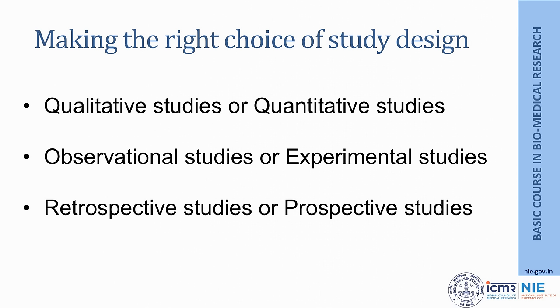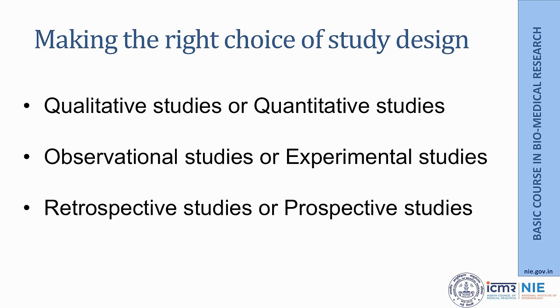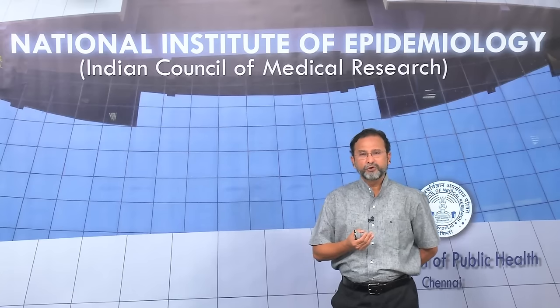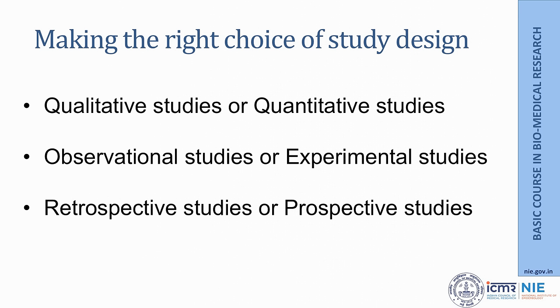One important thing is that if we want to do sound research, it is really critical that we make the absolutely right choice about the study design, because some kind of misjudgment here can lead to futile research. Broadly, some health research can be qualitative in nature, requiring person-to-person interviews, discussion in focus groups, free listing, or observations — it is mostly observational, open-ended, and people probe to find out information. Whereas quantitative studies are mostly based on structured questionnaires, where questions with specified options of answers are used.